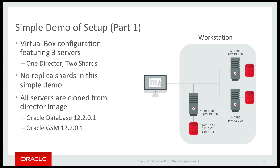In part one of this demonstration, we're going to deploy a sharded database to a very simple configuration. I've got three virtual machines which we're going to deploy this sharded environment on top of. They're all based from a single base image that contained the Oracle database software for 12.2 and the Oracle GSM software 12.2, all installed in separate Oracle homes. From that base image, we created three virtual machines — the first being the shard director, which will act not only as the shard director but will also contain the Oracle shard catalog. In a production environment, you're likely to have multiple shard directors and probably a dedicated server running the Oracle catalog database.